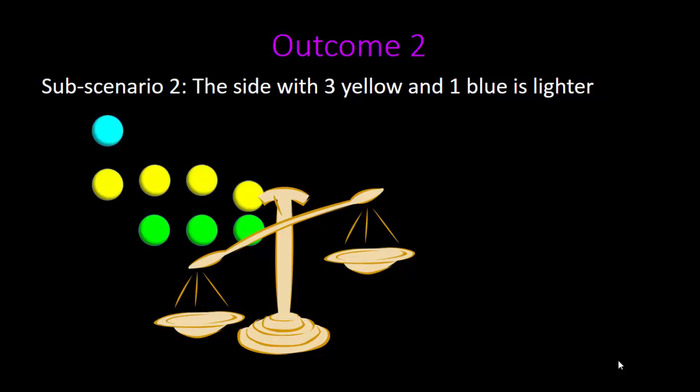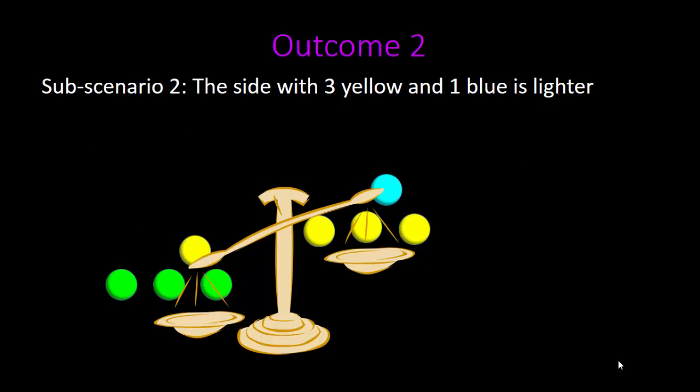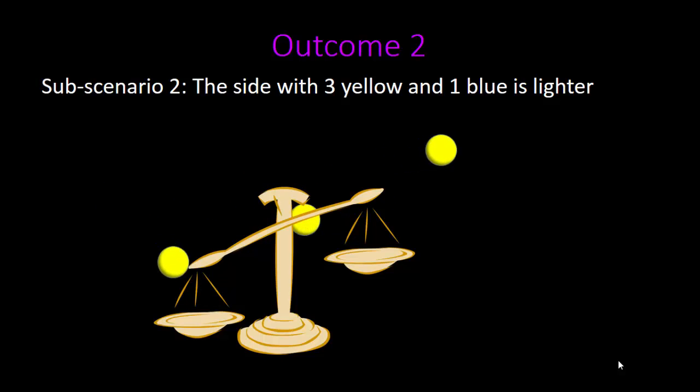In sub-scenario two, the side with the three yellow and one blue marble is lighter. This means the oddball is one of the yellow marbles on the right side. We can weigh two of them against each other to determine the irregular one.